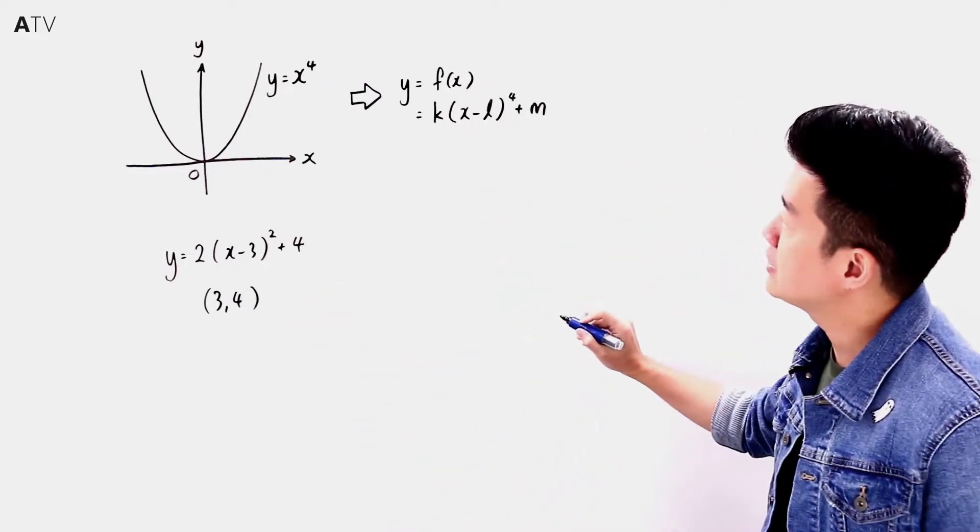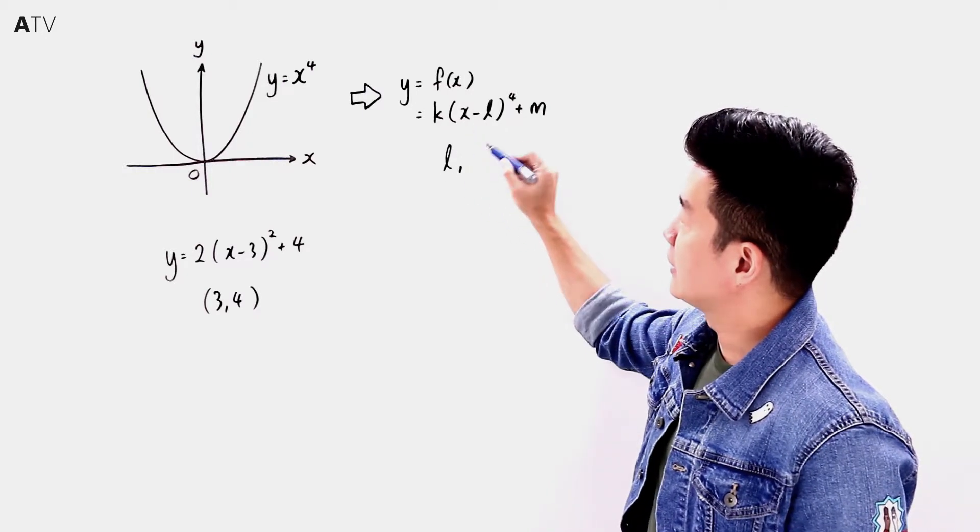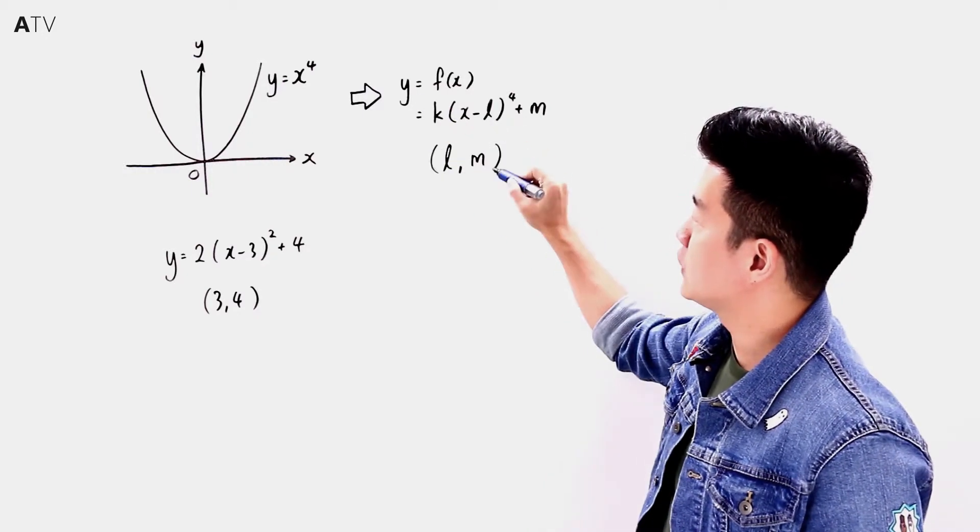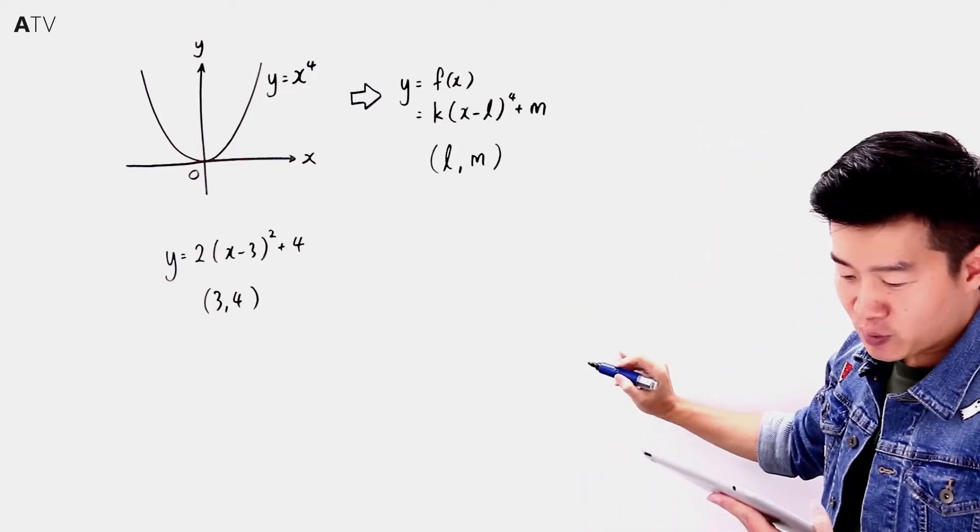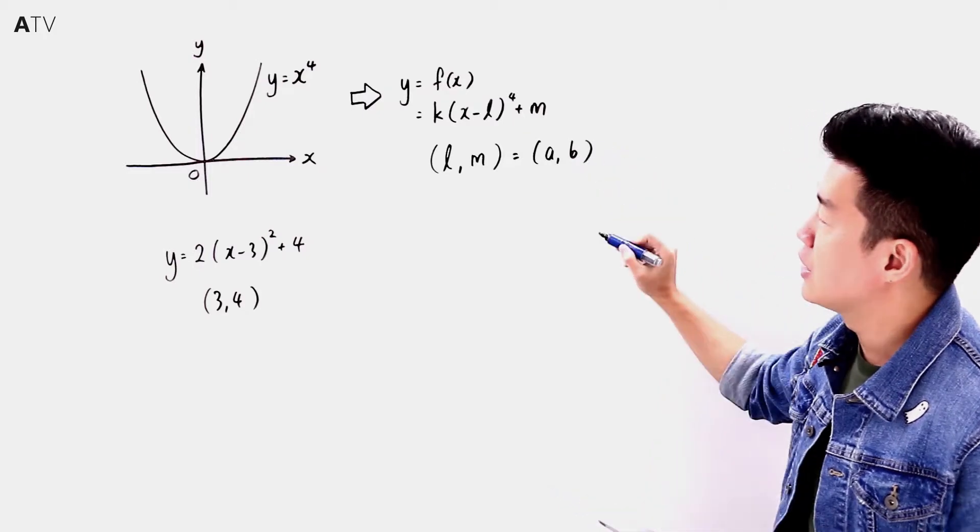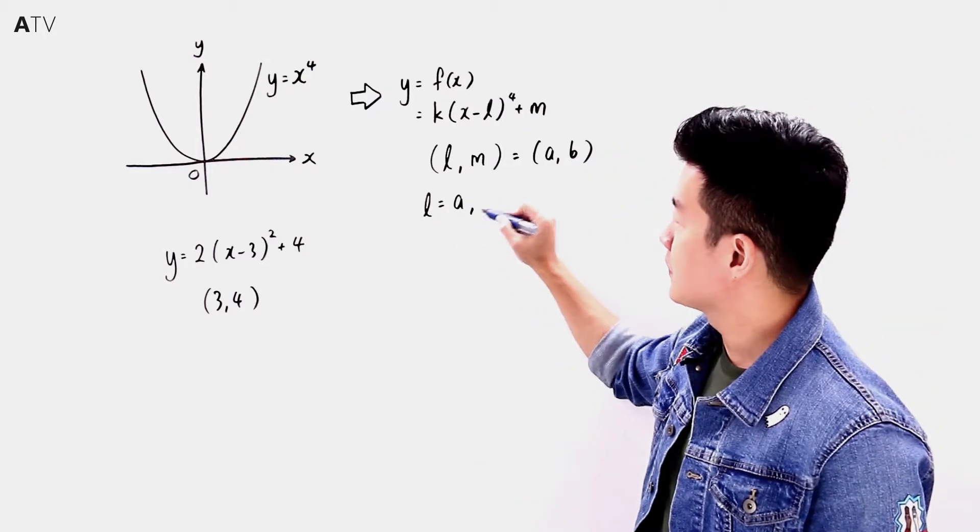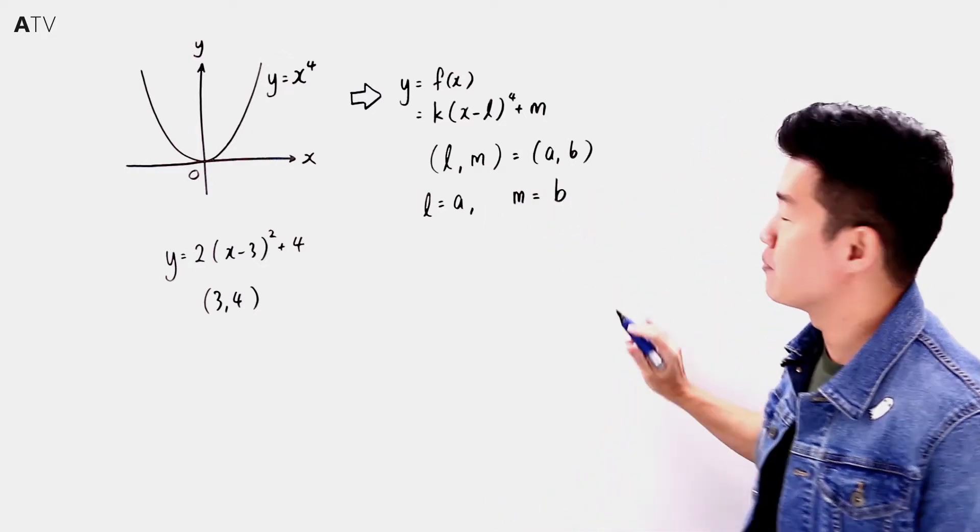So if I observe from here, the minimum point is when x = l and y = m. This is the turning point, and the question tells us this turning point is at (a, b). Which means l must be a and m must be b.